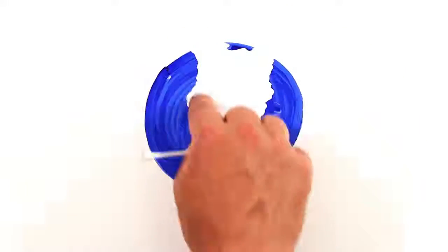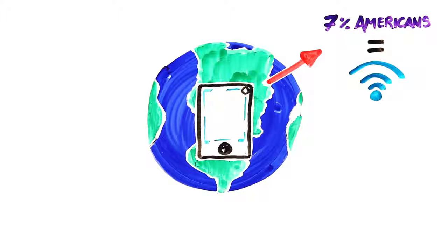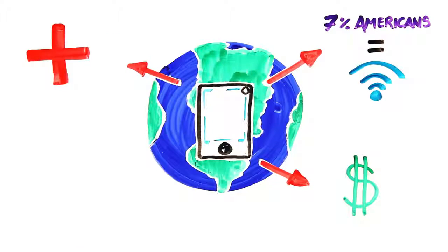Of course, smartphones also completely change our ability to access information, most notably in poor and minority populations. 7% of Americans are entirely dependent on smartphones for their access to the internet. A 2014 study found that the majority of smartphone owners use their phone for online banking, to look up medical information and searching for jobs.